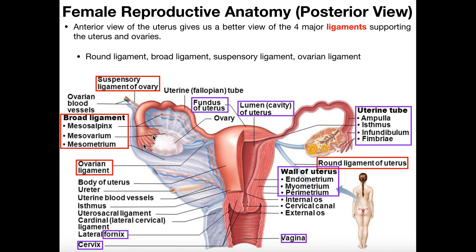It would appear that the fimbriae sort of hold the ovary in place, but that is actually not the case. The fimbriae do not hold the ovary in place. All the ligaments around here, including the broad ligament and the ovarian ligament, are actually what hold the ovaries in place. The fimbriae do not make direct contact with the ovary — they're close, but they normally don't make contact. There is one moment in the menstrual cycle when the fimbriae do make contact: during ovulation, when the secondary oocyte is transferred from the ovary into the fallopian tube.